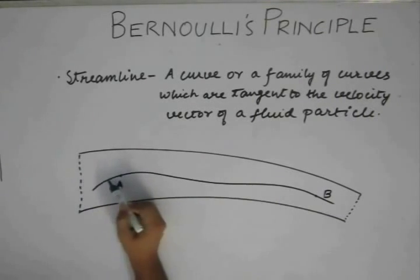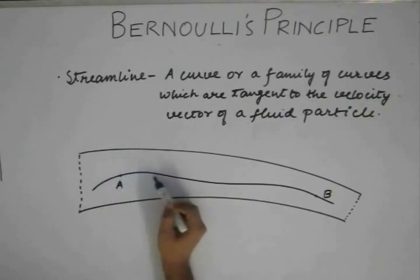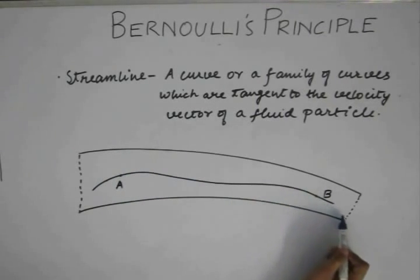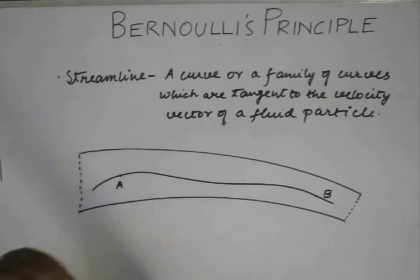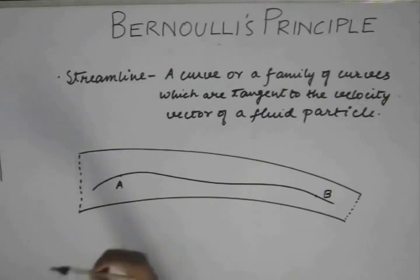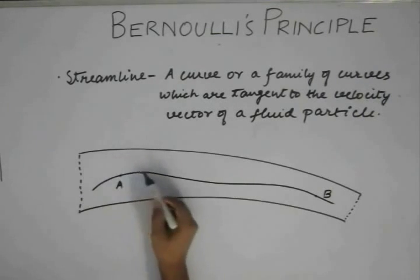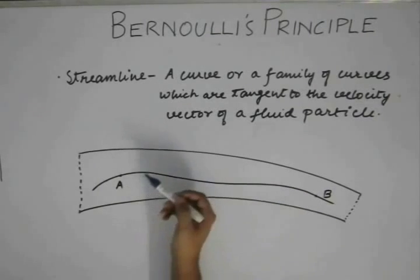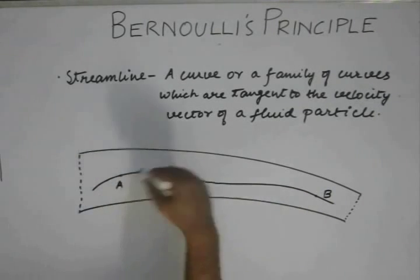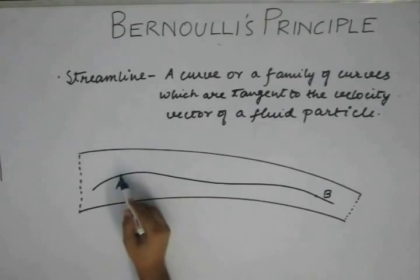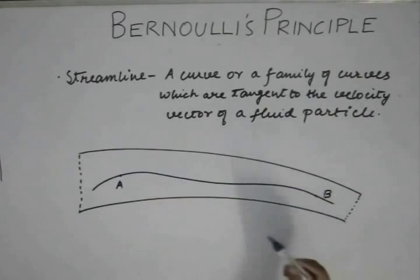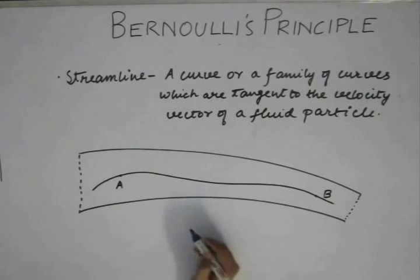A particle at some point in time will necessarily travel along this path along the streamline, provided our assumptions hold. At another point in time, another particle arriving here will also travel along this same path. So all particles along this streamline travel from A to B along this line.